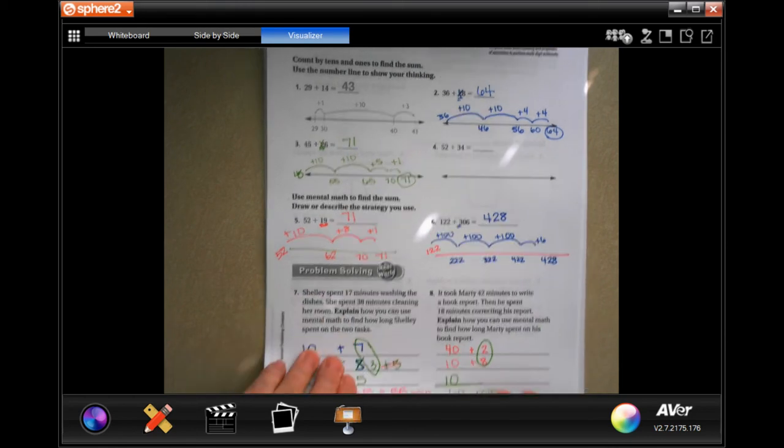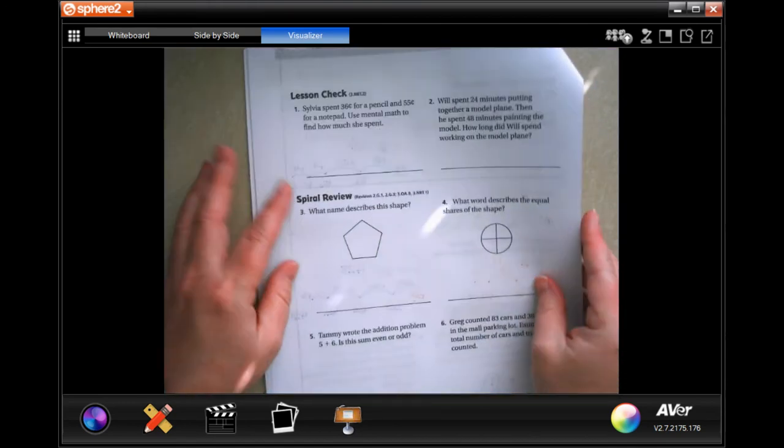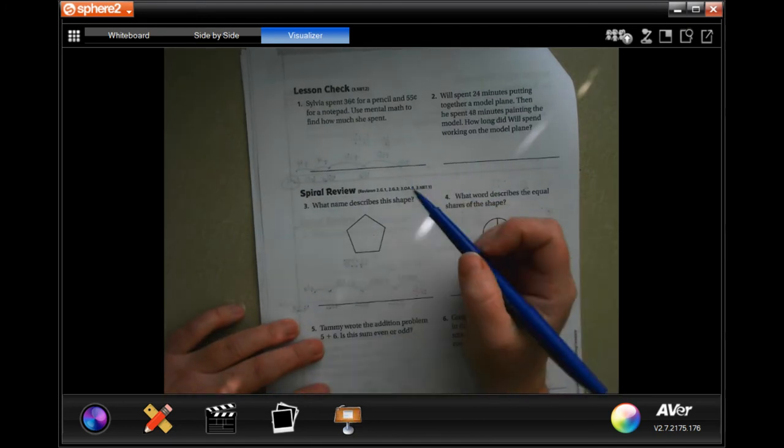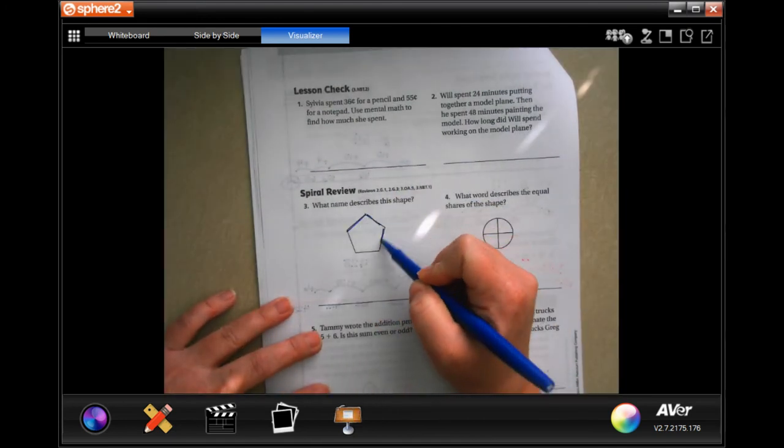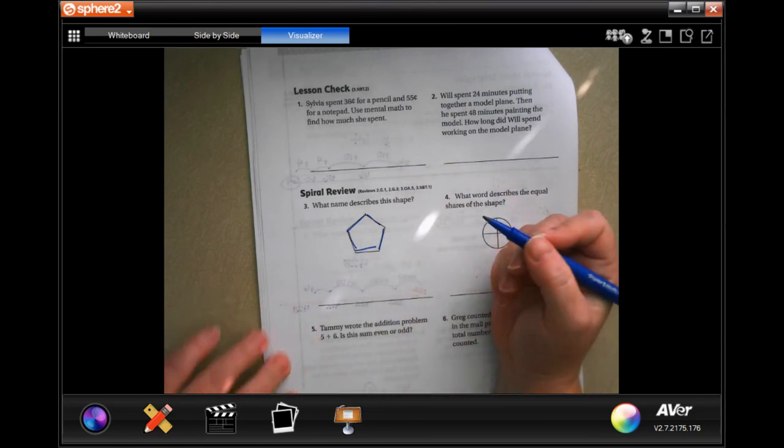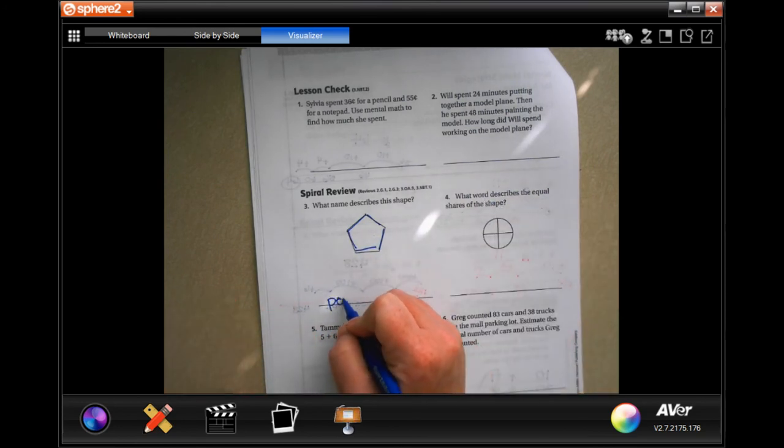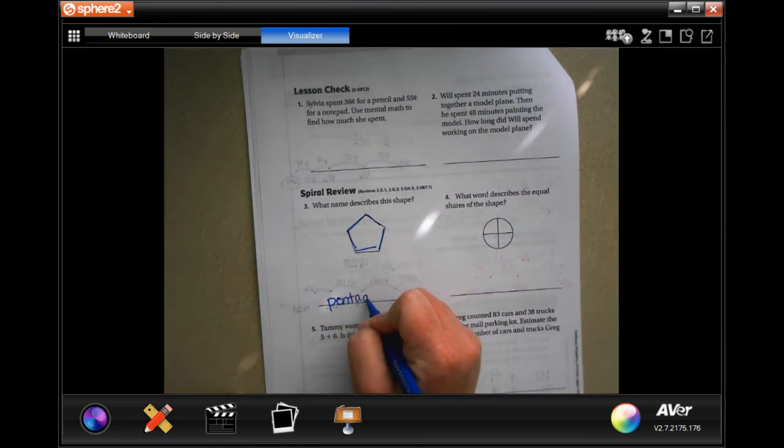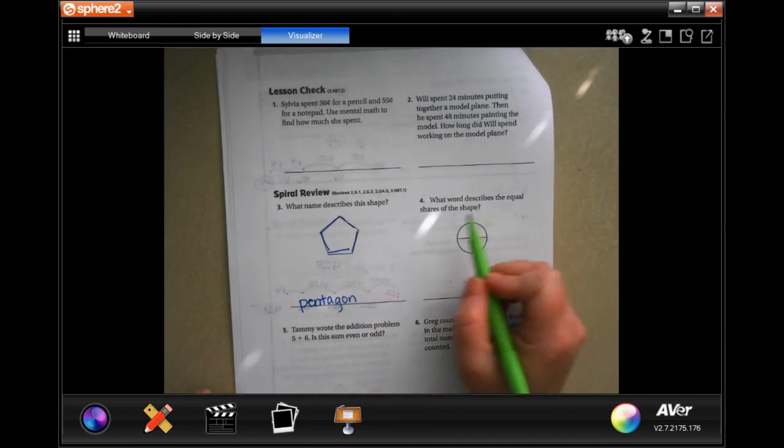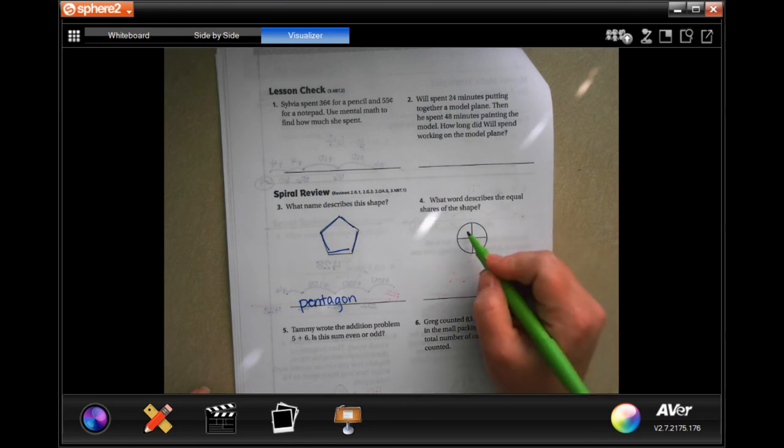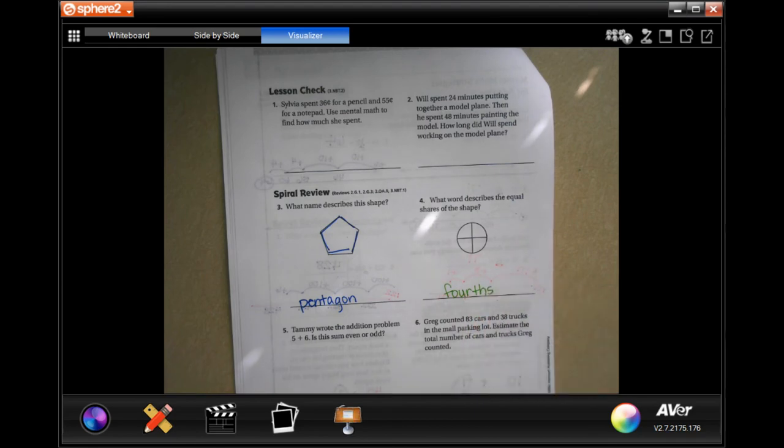All right, we're going to go on to the back. You guys are going to do the lesson check, just like always, and we're going to go down and do the spiral review. So what name describes the shape? Well, it has 1, 2, 3, 4, and 5 sides. That makes it a pentagon. What word describes the equal shares of the shape? Well, it's in 1, 2, 3, 4, so it's fourths.